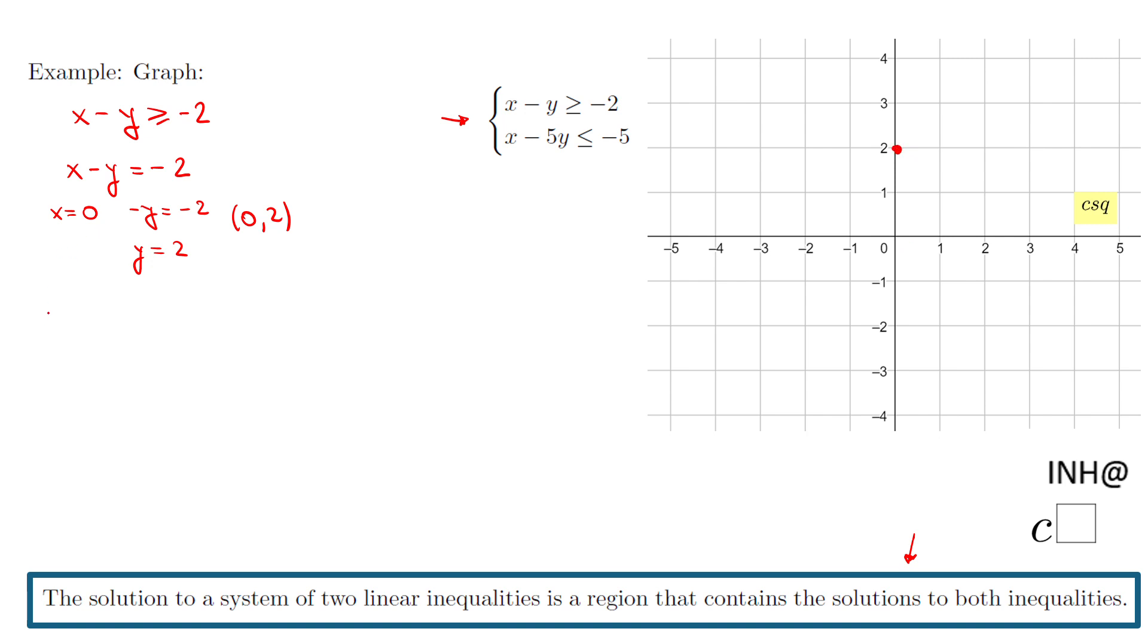Then I make y equals zero and I end up with x minus zero equals negative two, which gives me x equals negative two. So the second point I have will be negative two and zero, which is this point. So now I can sketch the graph of x minus y equals negative two, which is this guy.